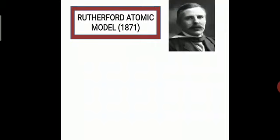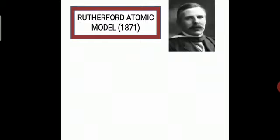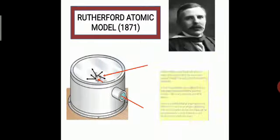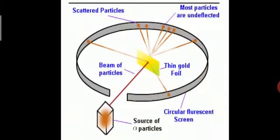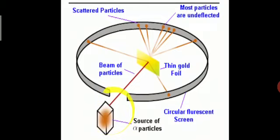Rutherford extended Thomson's idea and did an alpha ray scattering experiment in 1871 to identify the structure of an atom. He took a source of alpha particles — which are helium particles — packed inside a box with a single narrow hole, so that the rays could come out only through that one pathway.